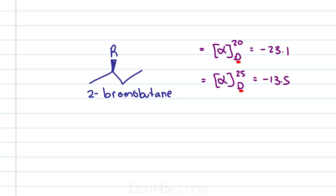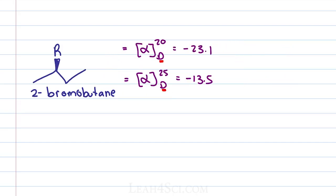Using this information, I can easily figure out the specific rotation for S, remembering that R and S are enantiomers. So if R is levorotatory, it turns light to the left or the negative direction, S in this case only will be dextrorotatory meaning turns light in the positive direction. S at 20 degrees will be positive 23.1, S at 25 degrees will be positive 13.5.